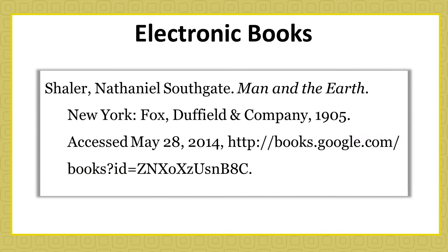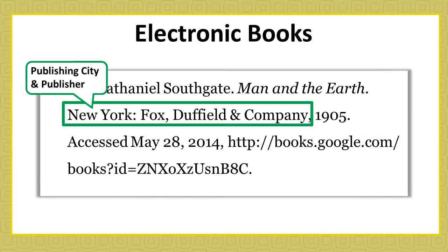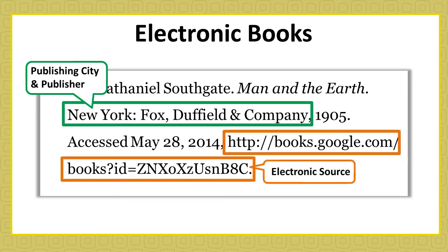Electronic books, or ebooks for short, will often contain publishing information as well. In addition, there usually is a notation that identifies it as an electronic source. This can take the form of a web address, a format type like Kindle or PDF, or even just a word like 'web' in the citation.